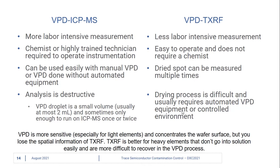When comparing VPD ICP-MS with VPD TXRF, generally the ICP-MS measurement is considered more labor-intensive and requires a chemist or highly trained technician compared to TXRF. Also, VPD ICP-MS can be done manually without automated equipment. However, the analysis is destructive and the VPD droplet volume is small, so sometimes you can only get one or two runs of the droplet on the ICP-MS.